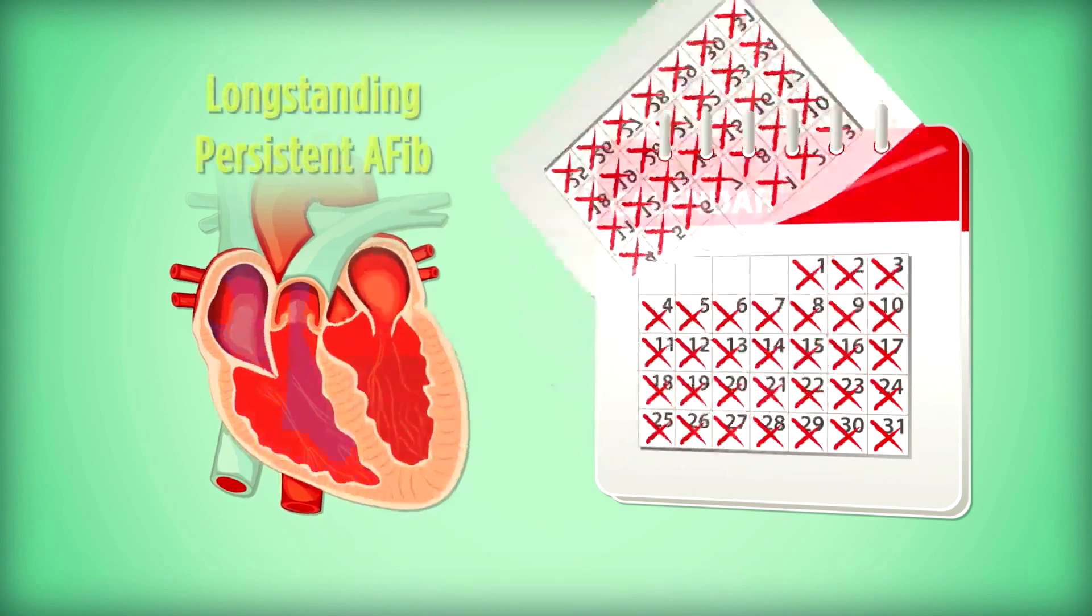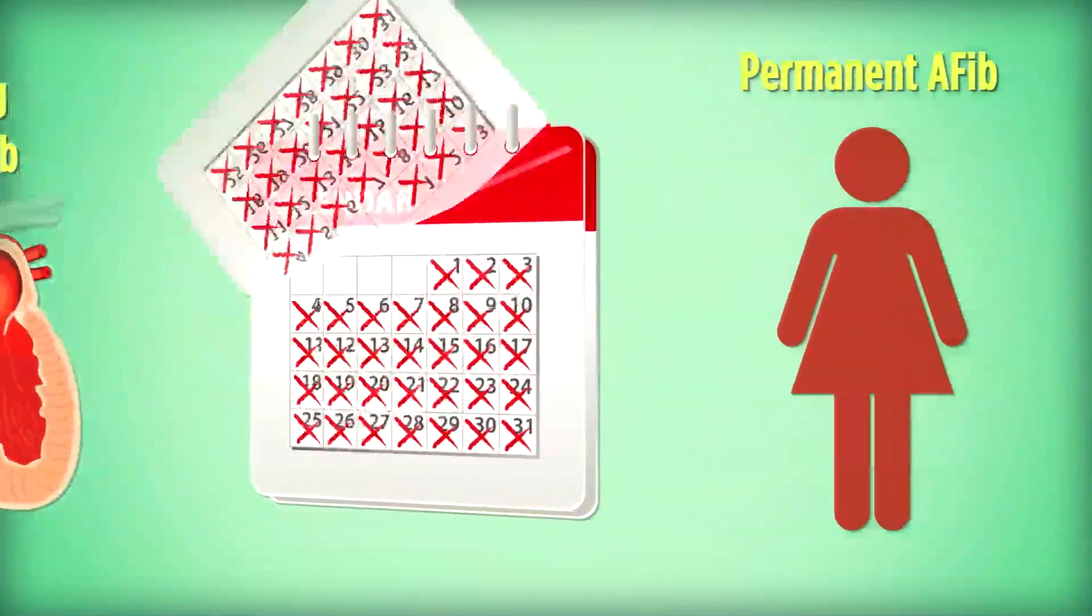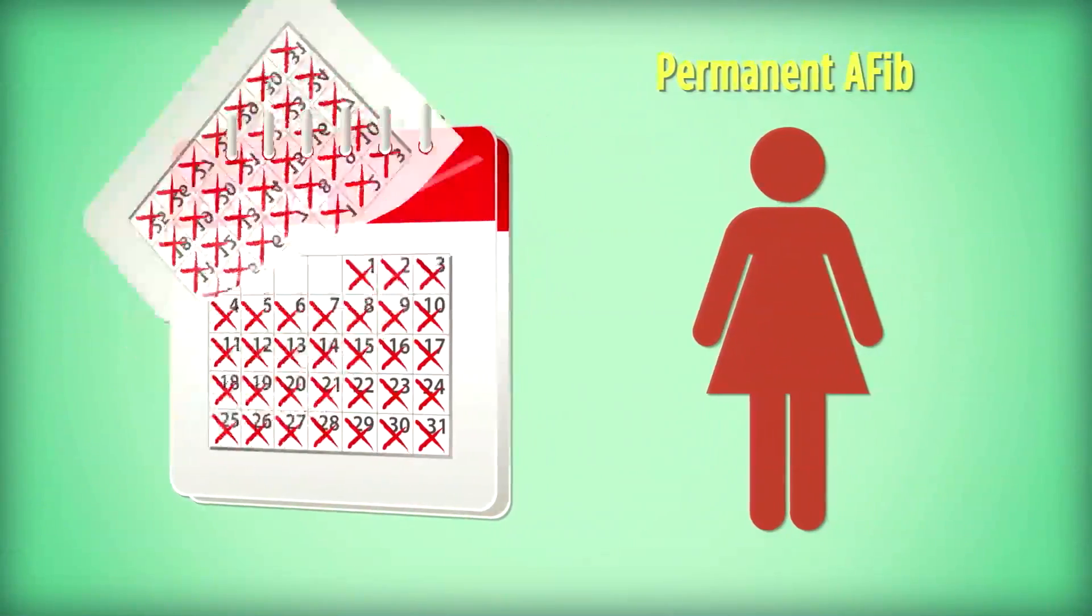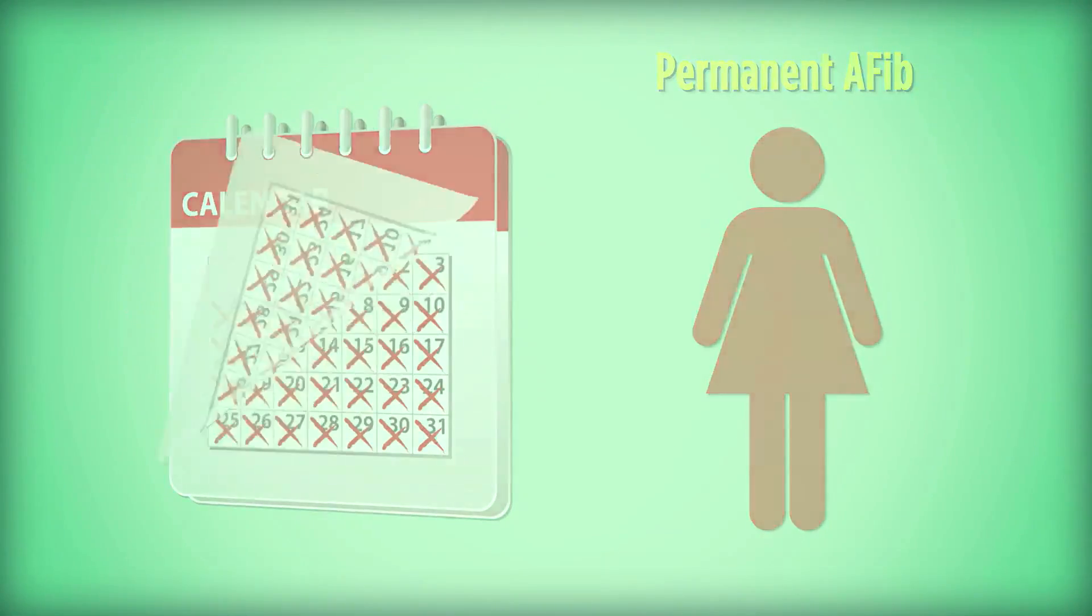Long-standing persistent AFib lasts continuously for more than a year. Permanent AFib is when episodes last longer than 7 days and where a decision has been made not to stop it.